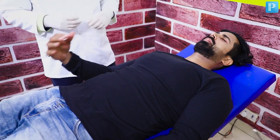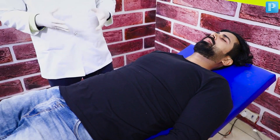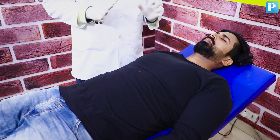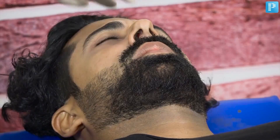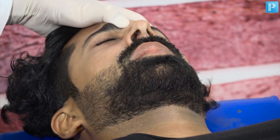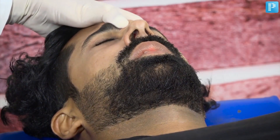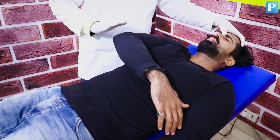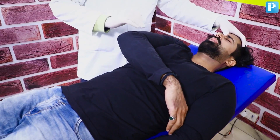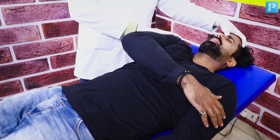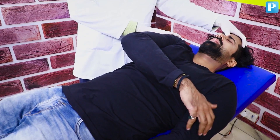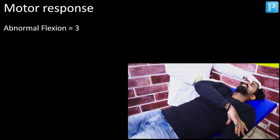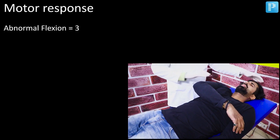Let us do this activity one more time. I have evaluated the motor score — the patient is not following any commands. I am once again pressing on the supraorbital notch. There is definitely the arm moving across, and there is a movement across the shoulder as well. I would call this abnormal flexion, and the score would come down to 3.